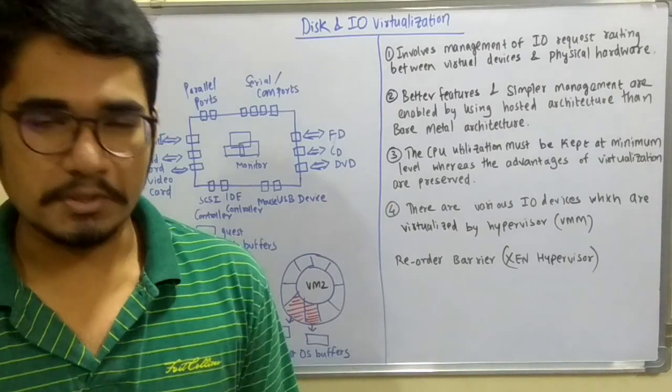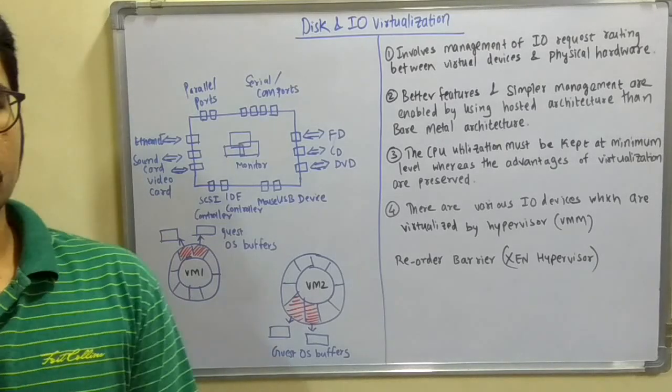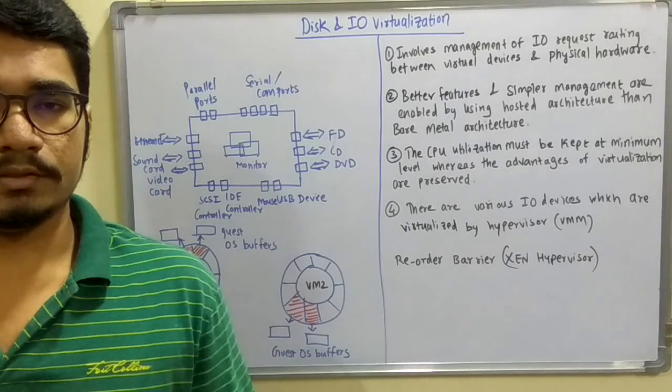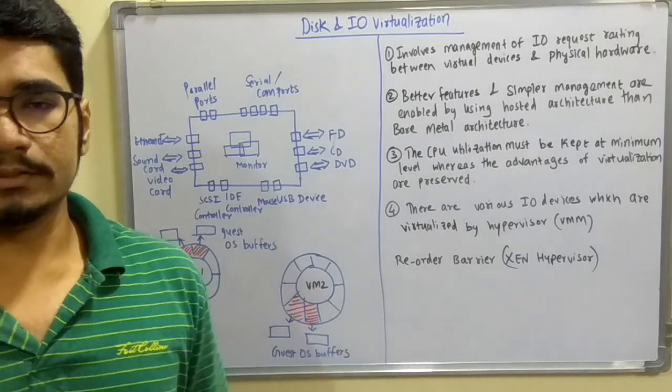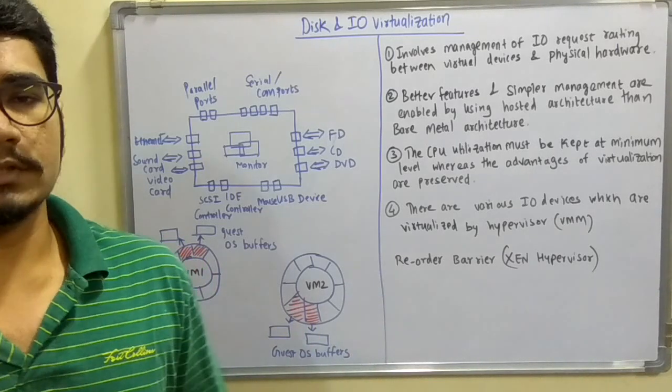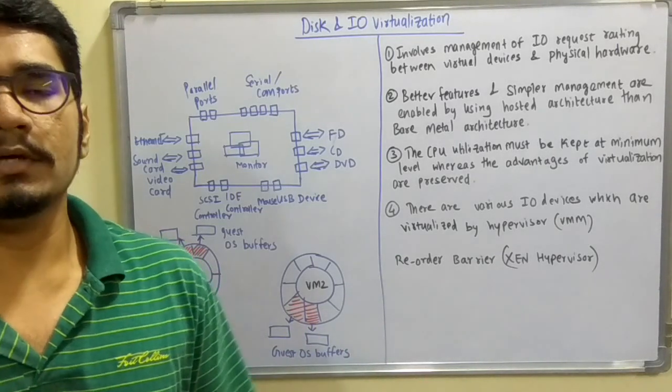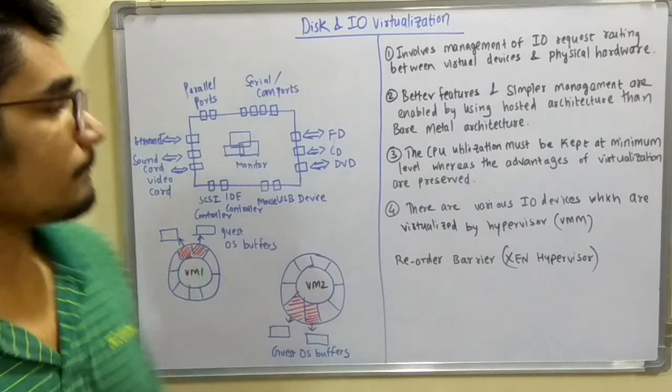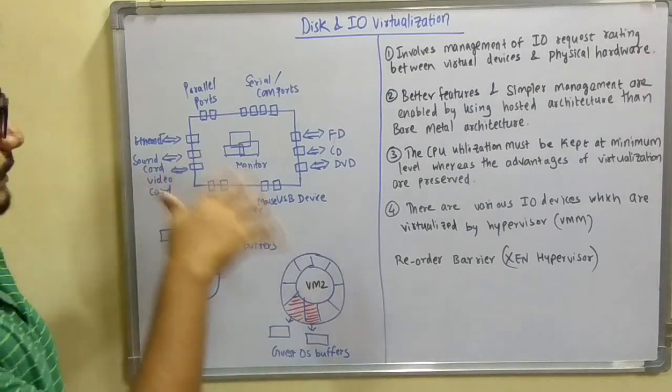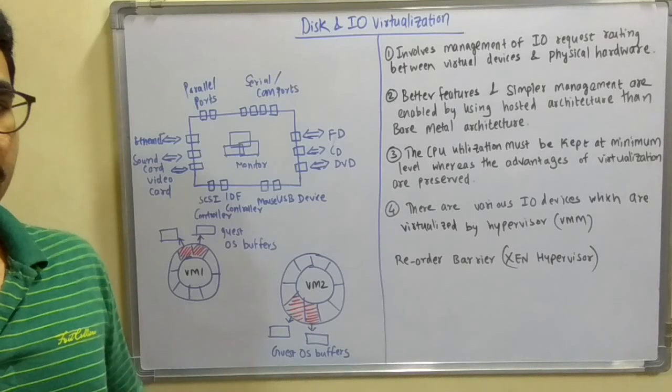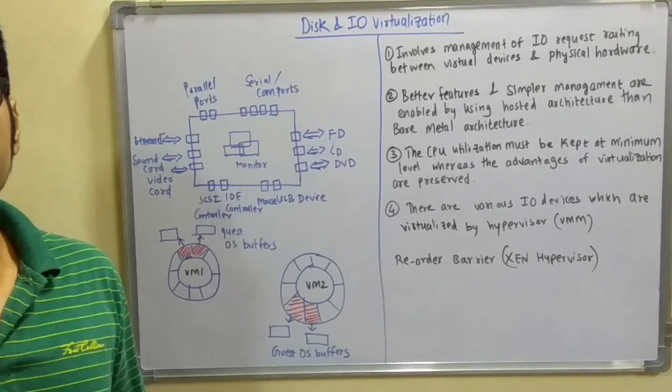First of all, disk and I/O virtualization means you have the disk storage system and the I/O requests which are going in and out to the system to carry out certain activities and processes. Let us understand what this diagram is and how internally the VMs are managed and how they are allocated devices to the guest OS.